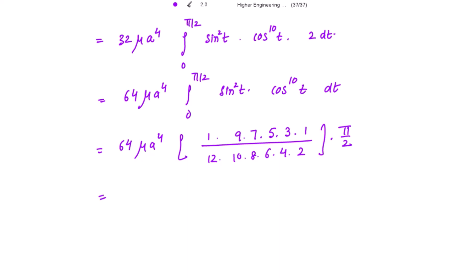Simplifying: numerator gives 1 times 9 times 7 times 5 times 3 times 1 equals 945, but condensing the product we get the numerator as 1 times 9 times 7 times 5 times 3 times 1 over denominator 12 times 10 times 8 times 6 times 4 times 2, multiplied by pi over 2. After full simplification, the required answer is M equals 21 pi mu A to the power 4 over 32.